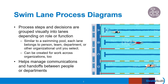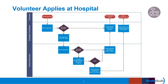Swim lane diagrams can vary in length depending on the process being studied. Here is an example of a basic simplified swim lane diagram showing key steps involved in applying to volunteer at a hospital. The lanes reflect activity by the volunteer, the volunteer coordinator, and human resources. As reviewed in the process mapping modules, shapes represent activities or decision points.